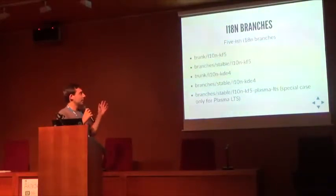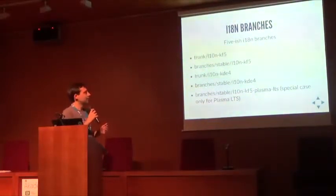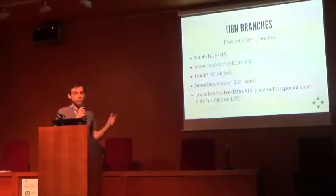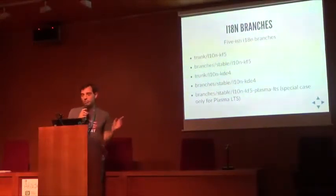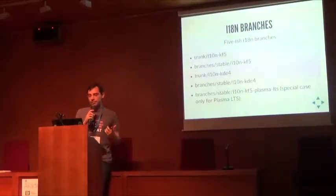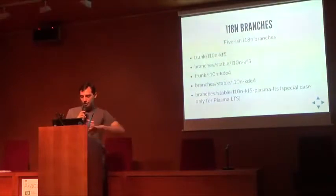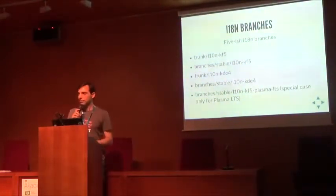As you can see from the names, the first branch usually tracks the most updated development. The stable branch tracks the related stable branch for framework files and so on. The exception is the last branch, which is a special branch created especially for the LTS of Plasma. It will be properly replaced with the new Plasma LTS. We should be able to just remove the old translations and only do bug fixes from them.